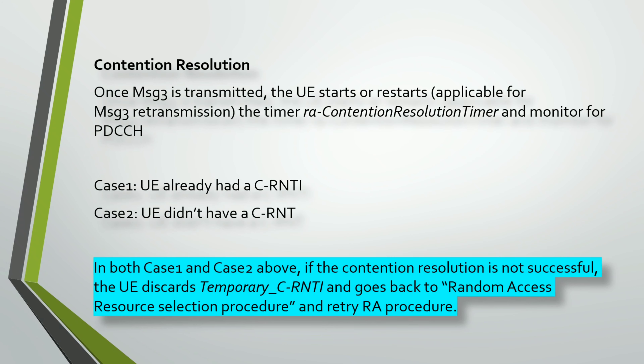Contention resolution happens at Message 4. Once Message 3 is transmitted, the UE starts or restarts the RA Contention Resolution Timer and monitors for the PDCCH. There are two cases: the UE already had a C-RNTI, or it did not. In both cases, if contention resolution is not successful, the UE discards the TC-RNTI and goes back to the random access resource selection procedure to retry.